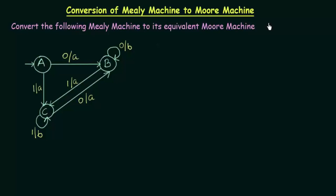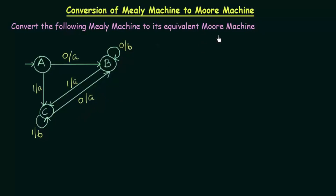Till now we have studied the conversion of Moore machine to Mealy machines. In this lecture we will be studying the conversion of Mealy machine to Moore machine. Here we have a Mealy machine given and our task is to convert it to its equivalent Moore machine. We can tell it is a Mealy machine because the outputs are associated to the transitions. We have to convert it to its equivalent Moore machine.